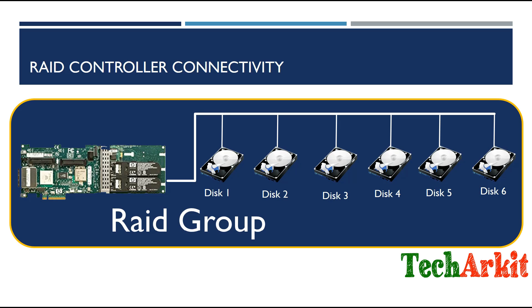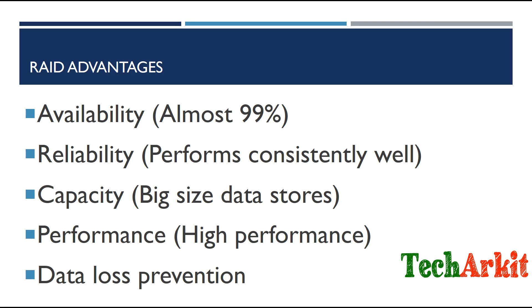When you configure multiple drives using a RAID controller, you get several advantages. First is availability: if one single hard drive fails in the RAID group, you can replace it with the same drive type and data will be recovered automatically. You get almost 99% availability; 100% if there is no failure. In case of a hard drive failure, you may get slightly degraded performance, but data remains available.